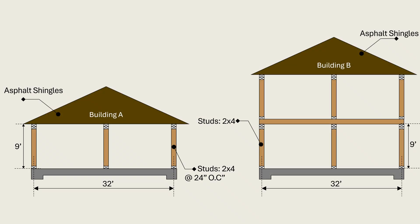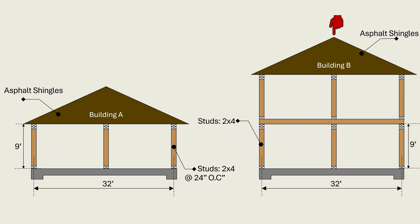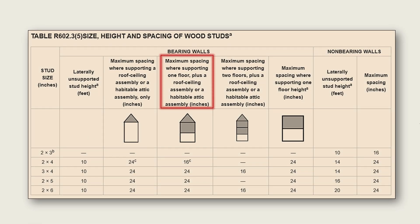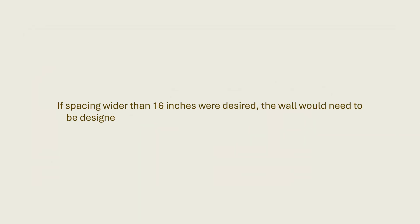The axial load on each stud consists of the roof and ceiling loading in addition to the weight of the wall, and the prescriptive provisions recognize that both strength and stiffness can be maintained at this wider spacing. For Building B, the addition of a floor significantly increases the compressive demand on the studs. Once a wall supports one floor plus a roof-ceiling assembly, the prescriptive path tightens, and the maximum permitted spacing for 2x4 studs becomes 16 inches on center. This reduction reflects the need to maintain adequate capacity as gravity loads increase. If spacing wider than 16 inches were desired, the wall would need to be designed using engineered analysis rather than relying on the prescriptive table.